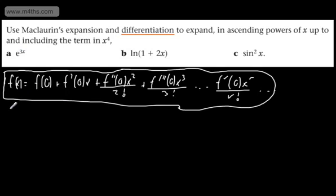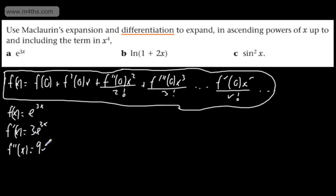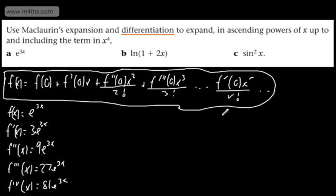Let's take f(x) = e to the 3x. I'm going to differentiate it first, then we'll do the general result after. f'(x) = 3e^(3x). The second derivative, f''(x) = 9e^(3x). The third derivative gives us 27e^(3x). The fourth derivative gives us 81e^(3x). And in general, the nth derivative of x gives us 3ⁿ·e^(3x).